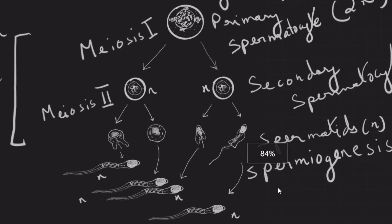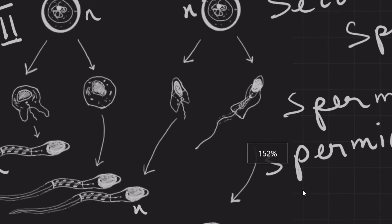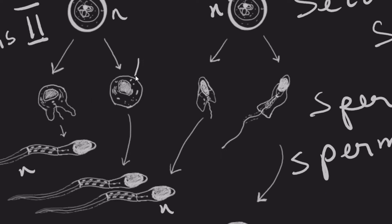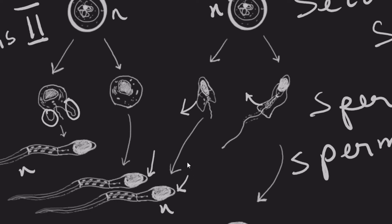The spermatids undergo spermiogenesis — physiological changes that occur in the nucleus and cytoplasm of the spermatids. Excess cytoplasm is sloughed off, the nucleus becomes more ellipsoidal in shape and more condensed, and more cytoplasm is discarded as residual matter. The mitochondria descend behind the nucleus to form the middle piece of the developing spermatozoa. Microtubules also come to lie behind the nucleus to form the axial filament, and the Golgi apparatus forms the acrosomal cap, or acrosome, which carries hydrolytic enzymes.